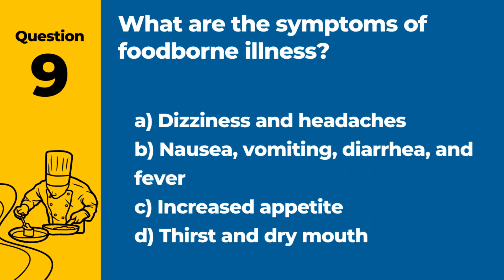Question 9. What are the symptoms of foodborne illness? Answer: B. Nausea, vomiting, diarrhea, and fever. These are common symptoms of foodborne illnesses, indicating the body's response to harmful bacteria or toxins.